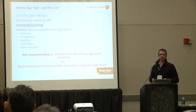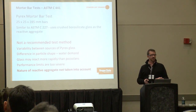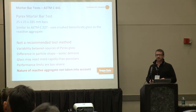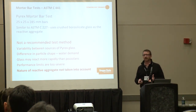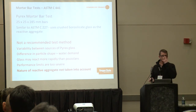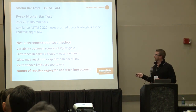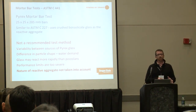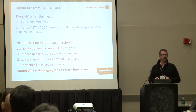The ASTM C441 test is virtually identical to C227 — the same mortar prism size — but is used to evaluate the efficacy of a supplementary cementitious material. The challenge is that instead of using the actual reactive aggregate being assessed, it uses pyrex glass — a highly siliceous, highly reactive glass. This doesn't give an idea of what's happening in the field because you're not assessing the actual aggregate type being used.